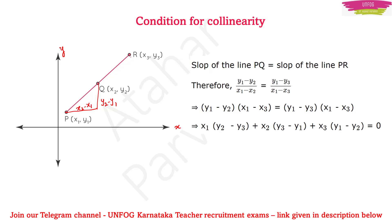Similarly, if you take the slope of PR it will be (y1 − y3) / (x1 − x3). Now if you cross-multiply these two equations you get the final equation — the condition for collinearity: x1(y2 − y3) + x2(y3 − y1) + x3(y1 − y2) = 0.